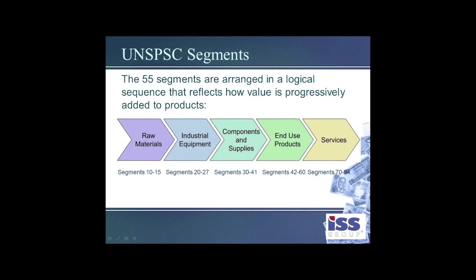The core basic segments include raw materials, industrial equipment, components and supplies, and end-use products. On top of that, there's a whole group of segments for services. This is a broad categorical scheme that can be extended — you can create elements for your own purposes that are not part of the standard code set, as long as you and your suppliers or customers agree upon that definition.